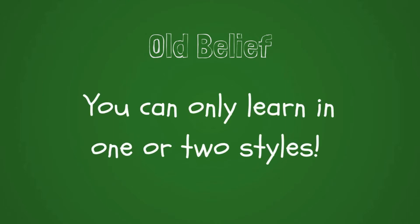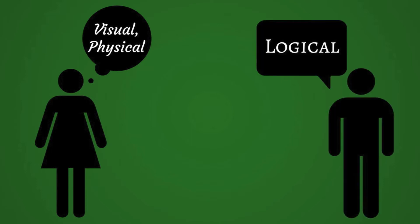It was believed for a long time that everyone had one or two learning styles that worked for them and could not learn if something was presented outside of those styles. For example, if my learning styles were visual and physical and you tried to explain something to me logically, I would be unable to learn what you were teaching me because you did not use one of my learning styles.